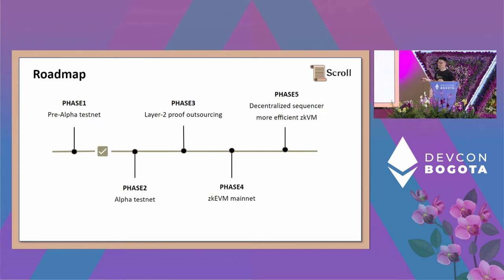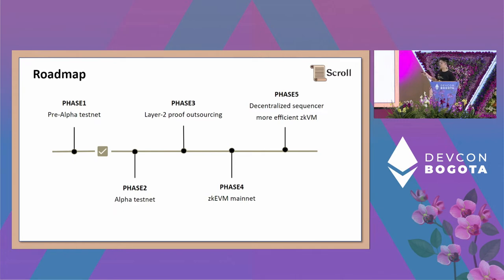In phase two, we will move to an alpha testnet very soon — a permissionless version where anyone can use it directly without permission, and developers can deploy any contract without registering. We are moving to that very soon.